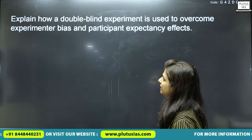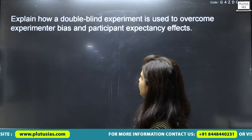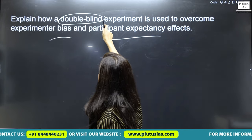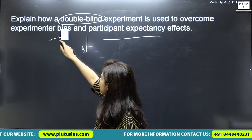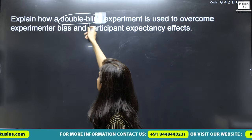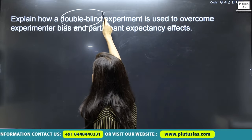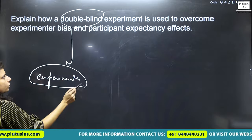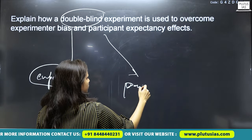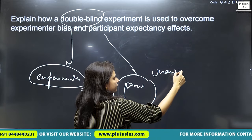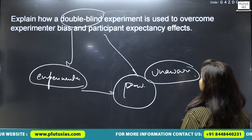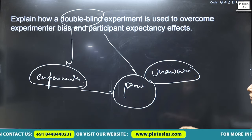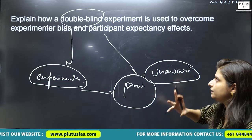The next question is: explain how a double blind experiment is used to overcome experimental bias and participant expectancy effects. In a double blind experiment, both the experimenter and the participant are unaware of the treatment condition. You need to explain this double blind experiment and how it produces effective, unbiased results.